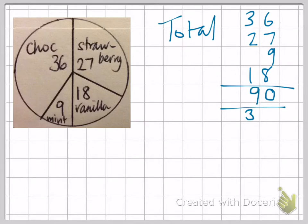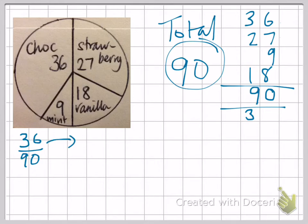So to work out the fraction for chocolate, what we would do is say we've got 36 out of 90, and then we simplify that. Well, we can divide both of those by 9. They're both in the 9 times table.